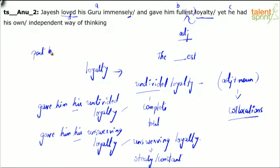But sometimes what happens is there is a sentence where there is more than one part that has an error. Unfortunately. Hopefully we will not come across questions like this in our exam. If that is the case I would rather advise you to skip it. But let's look at the next part. Yet he had his own. Jayesh loved his guru immensely and gave him his undivided loyalty or gave him his unswerving loyalty. Yet he had his own independent way of thinking.